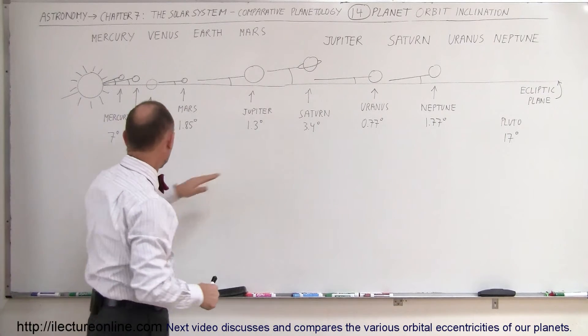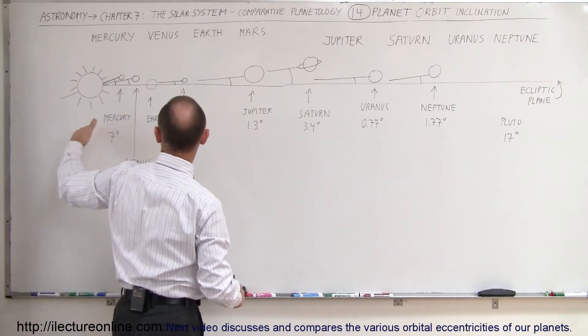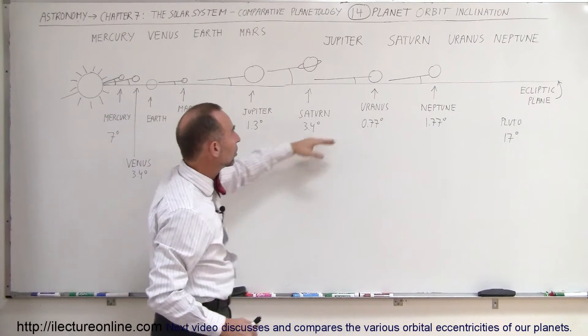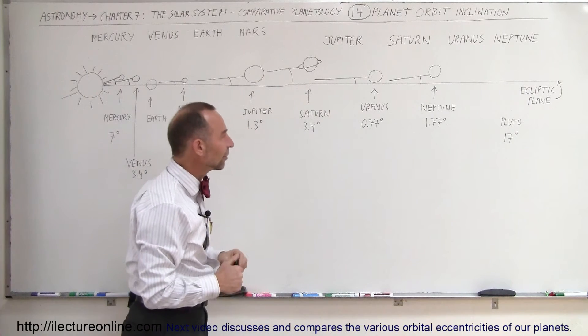Saturn, that's about the same as Venus at 3.4 degrees. Uranus is very close, if you look at all the planets. Uranus is closer to the ecliptic plane than any other planet in the solar system at less than 1 degree, 0.77 degrees.